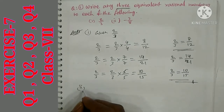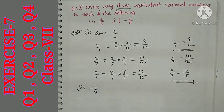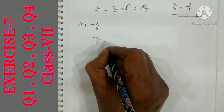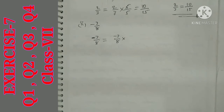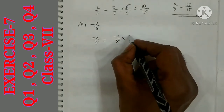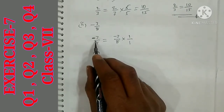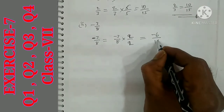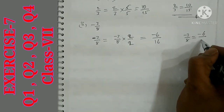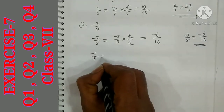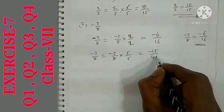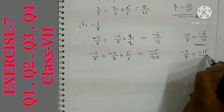Question number 2: minus 3 by 8 is given. You can stop the video and try yourself — your answers may differ since you can take any number. For example, multiplying by 2 over 2: minus 3×2 = minus 6, 8×2 = 16. So minus 3 by 8 equals minus 6 by 16. Multiplying by 5 over 5: minus 3×5 = minus 15, 8×5 = 40. So minus 3 by 8 equals minus 15 by 40.